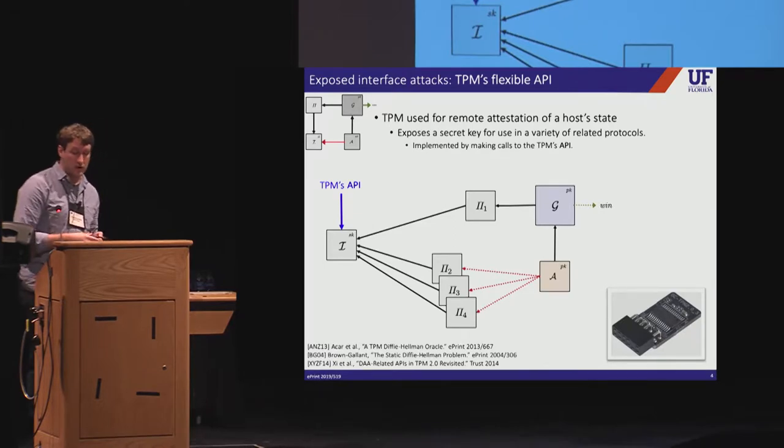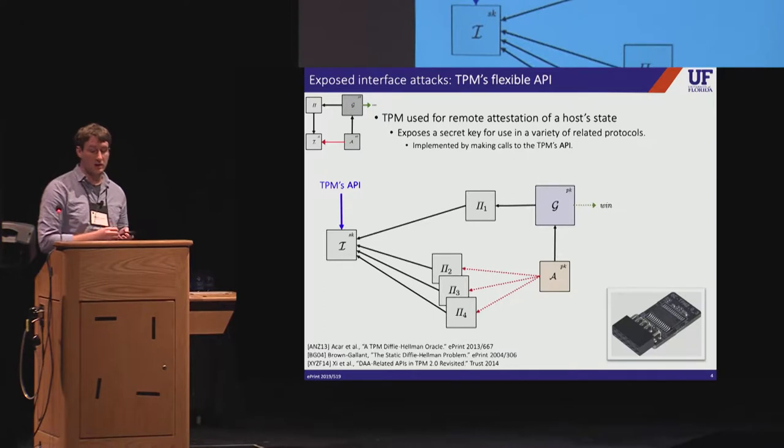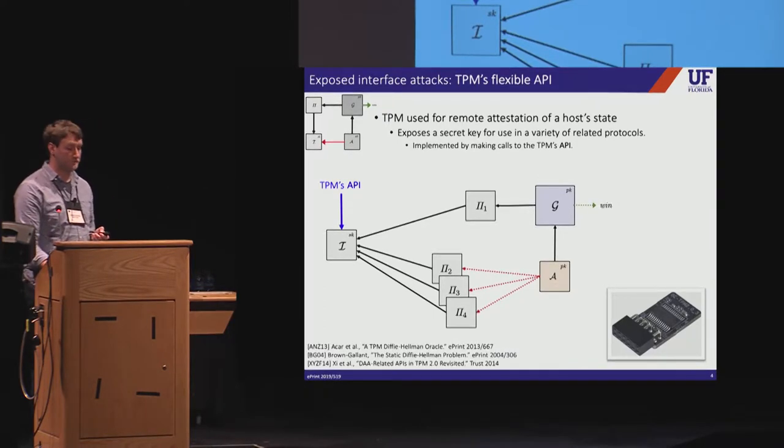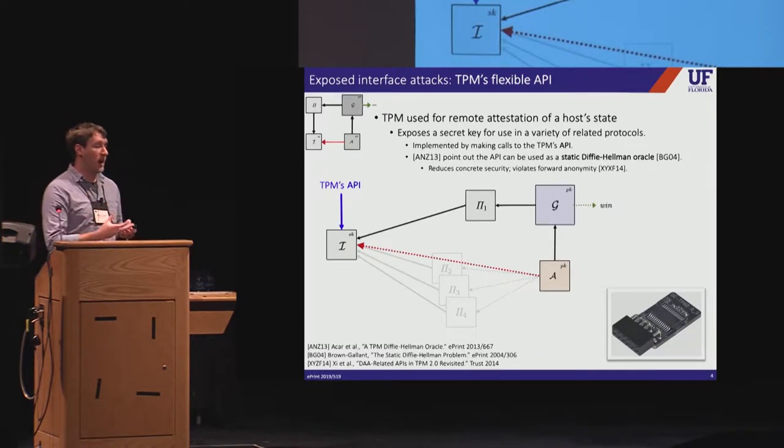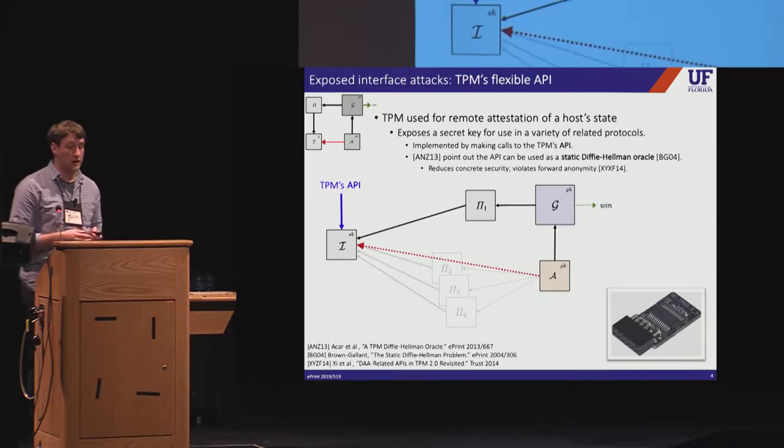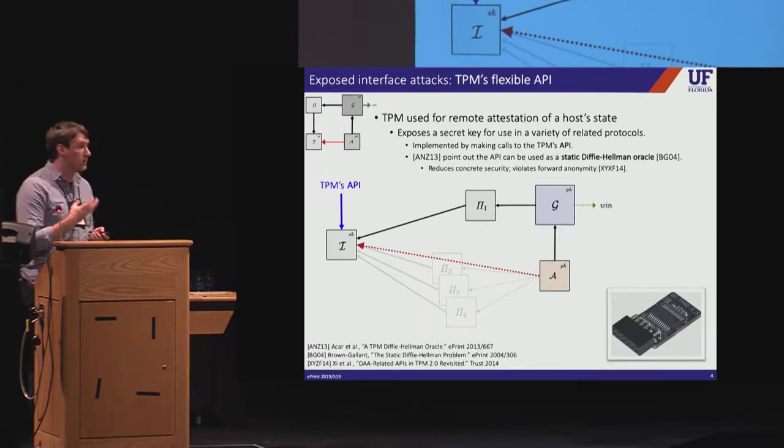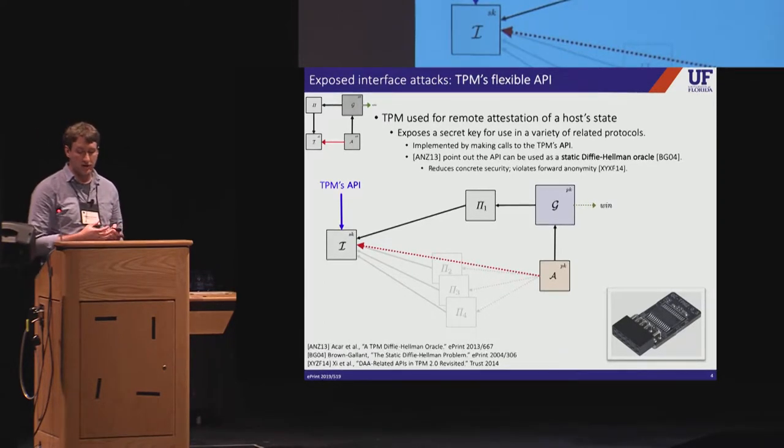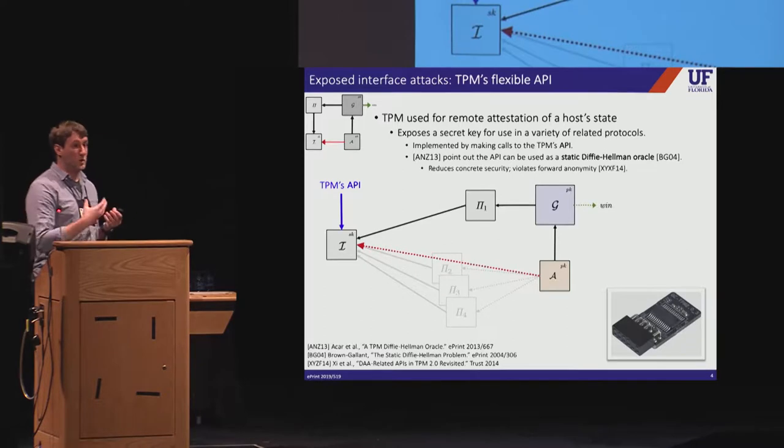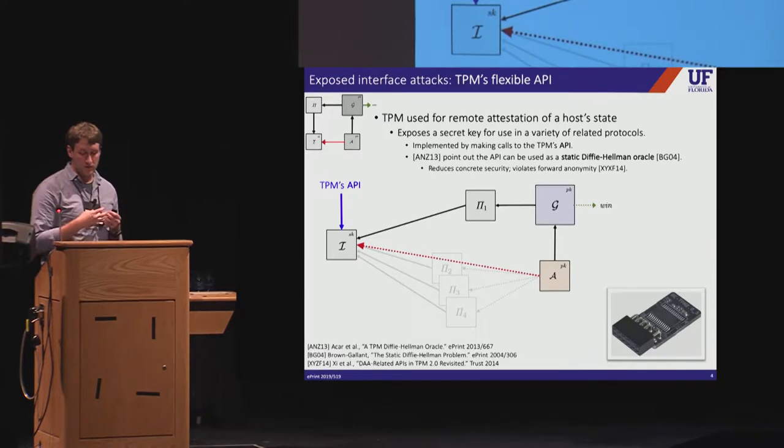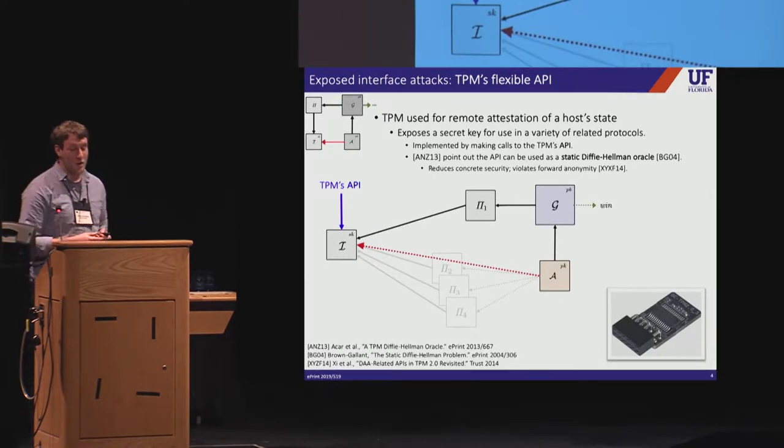So the API exposes low level key operations that are common to all of the protocols that TPM intends to support. When a remote server requests attestation of a host state, the host makes calls to this API in order to execute the protocol with the server. This means that when we're analyzing this scheme, we might conservatively model these protocols execution by giving the adversary direct access to the TPM. So this is what we call an exposed interface attack. And here it's modeling something very realistic. The purpose of the TPM is to provide a hardware boundary for cryptographic keys so that if the adversary has control of the host, it still doesn't have direct access to the keys. So when we're modeling the security of these protocols, we want to consider what happens when the adversary has compromised the host.